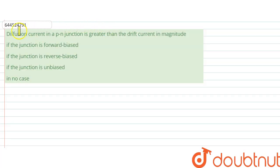question. The question says: diffusion current in a p-n junction is greater than the drift current in magnitude if what? So first of all, p-n junction. In this we have